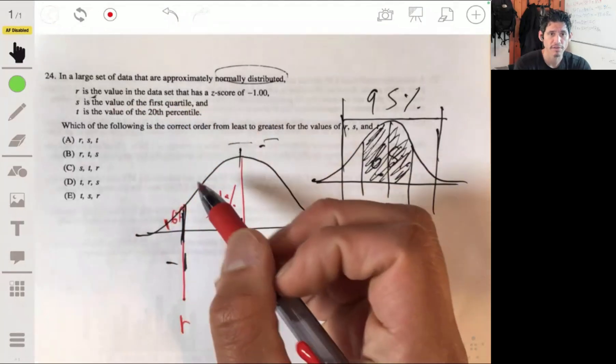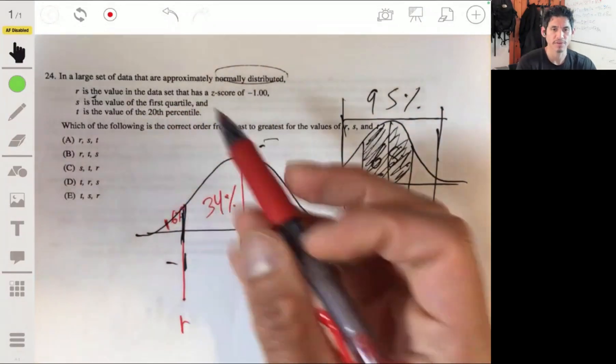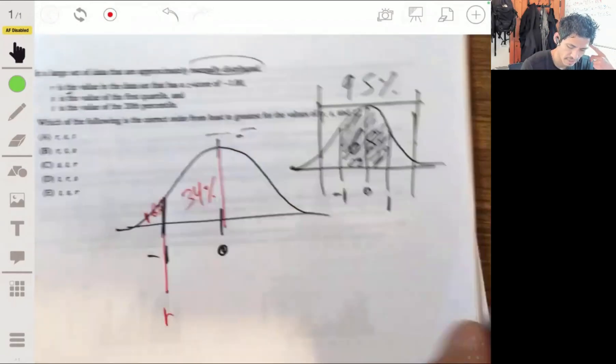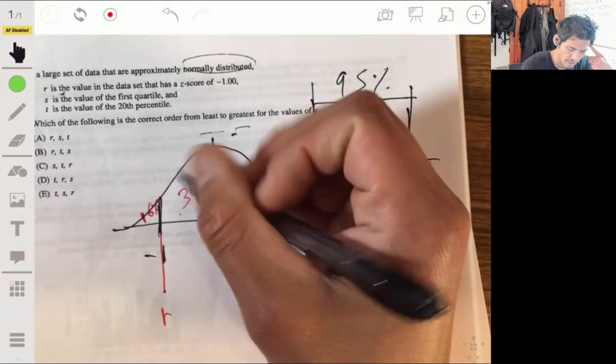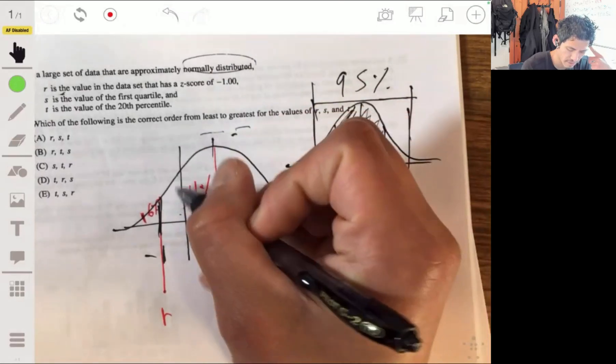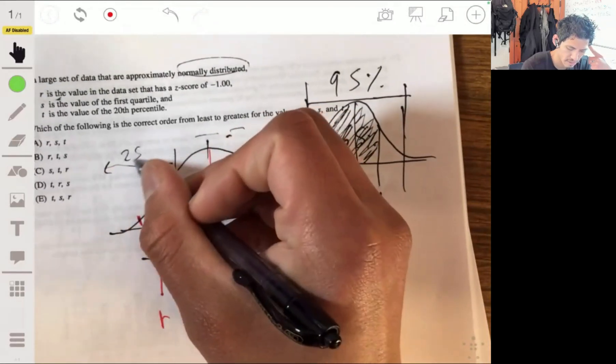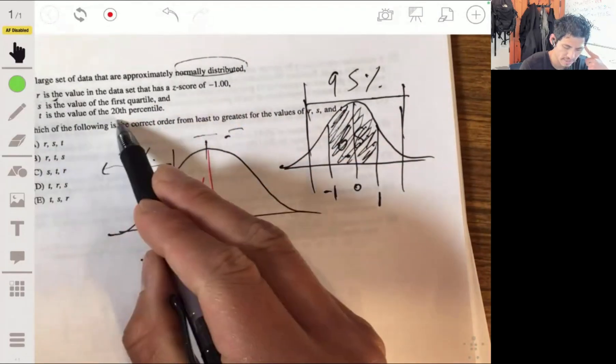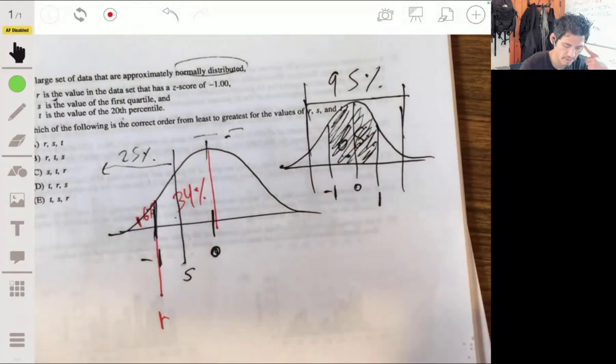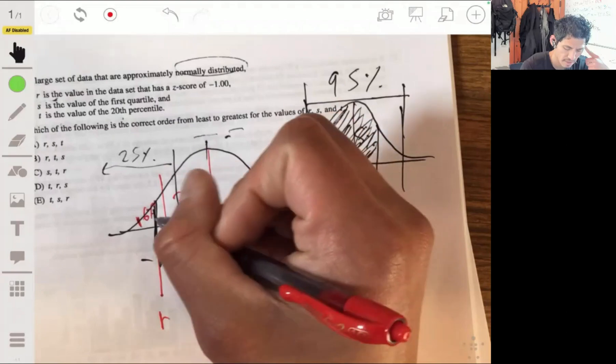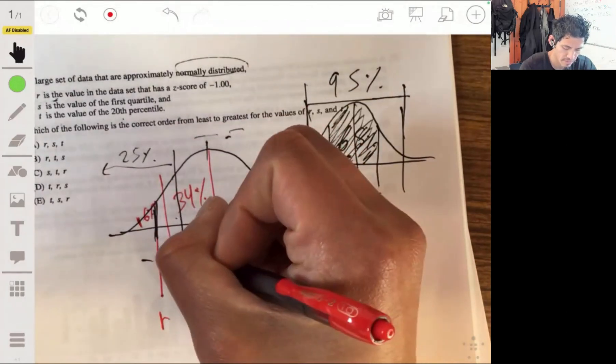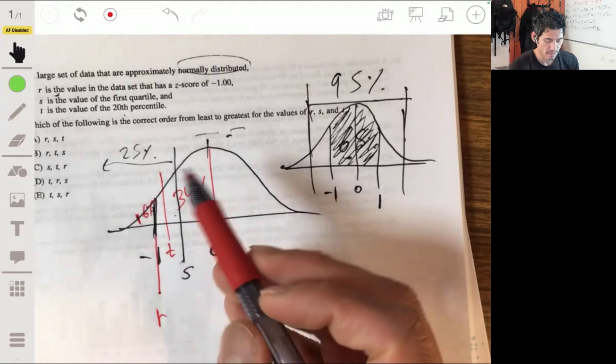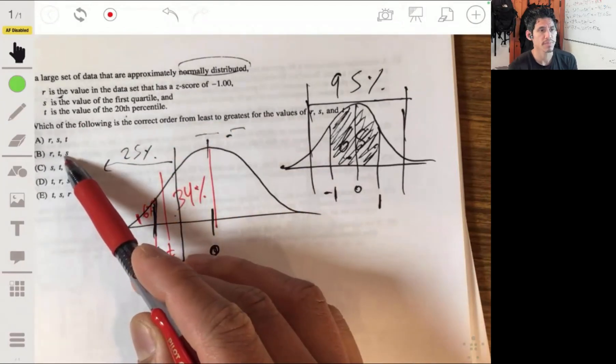S is the value of the first quartile. First quartile is the first 25%. So 25% is going to be more to the right here, somewhere over here. That's where S is. And T is the 20%. T is going to be in the middle because 20 is between 16 and 25. So R, T, S. The answer will be B.